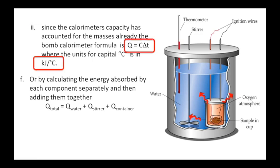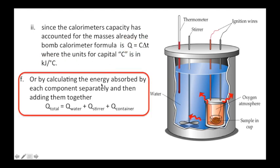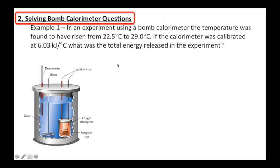So that is very important: Q equals C delta T, and we deal with big C which is heat capacity. Or we could do all that by hand - calculate the mc delta T of the water, the mc delta T of the stirrer, the mc delta T of the container - but in a bomb calorimeter that's all been done for us. So bomb calorimeter questions are actually really easy.